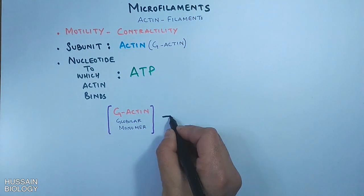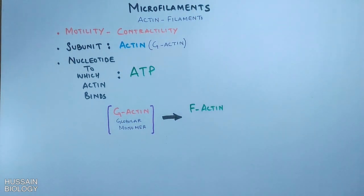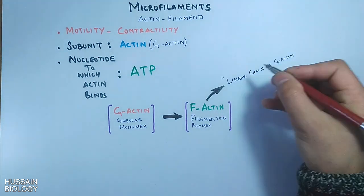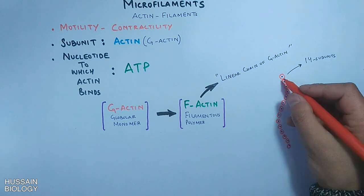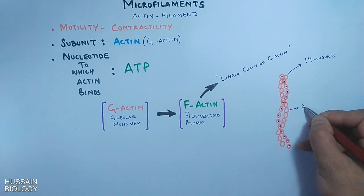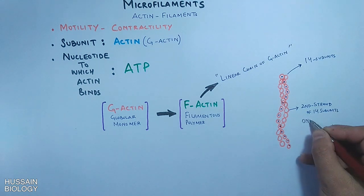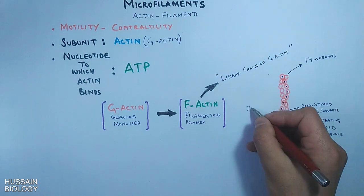This monomer protein polymerizes into F-actins, which is filamentous polymer, a linear chain of G-actins. Here in this structure we see there are two strands. The one strand has 14 subunits and the other strand also has 14 subunits. So one repeating unit consists of 28 subunits with 72 nanometer length.